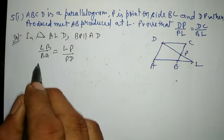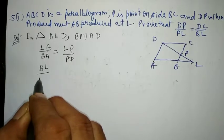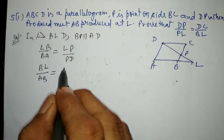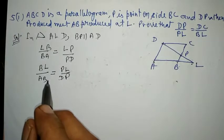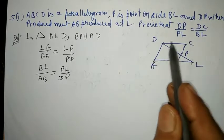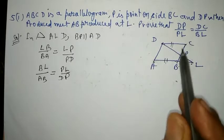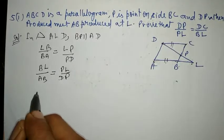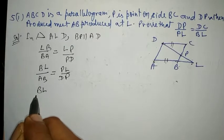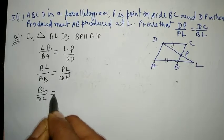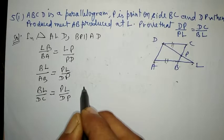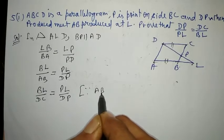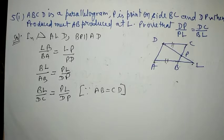So BL upon AB is equal to PL upon DP. Since ABCD is a parallelogram, opposite sides are equal, so AB equals DC. Substituting AB with DC: BL upon DC is equal to PL upon DP. Since AB = CD.